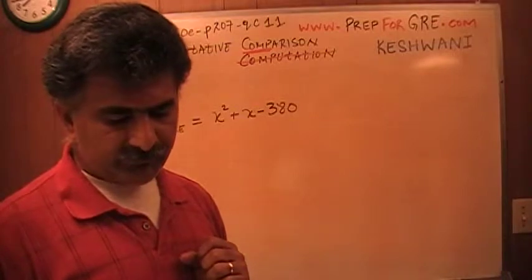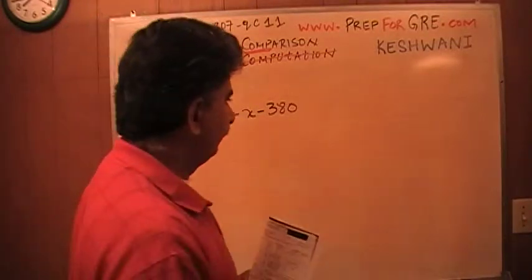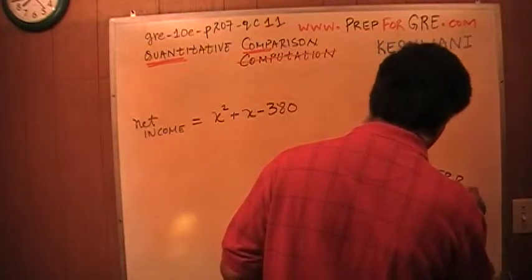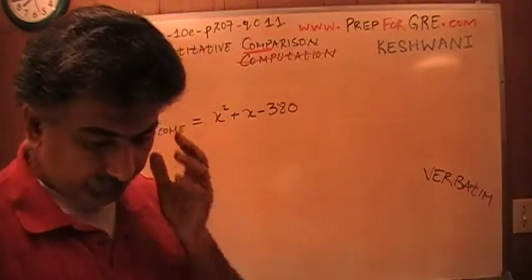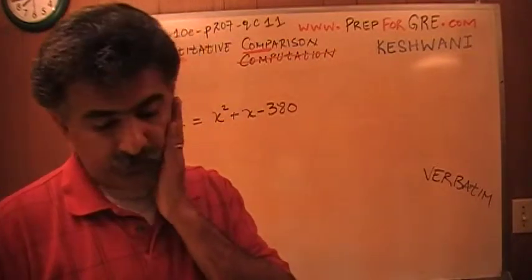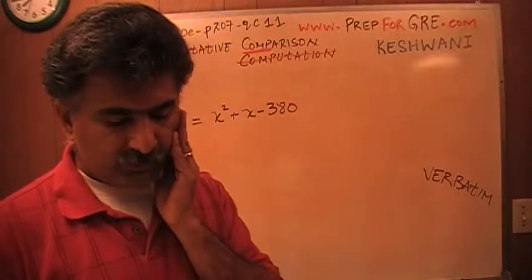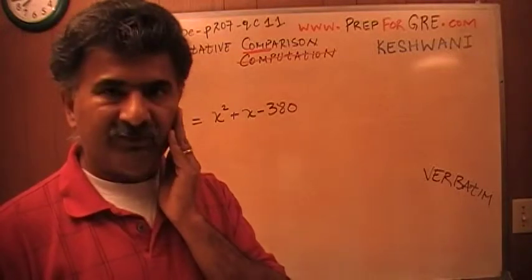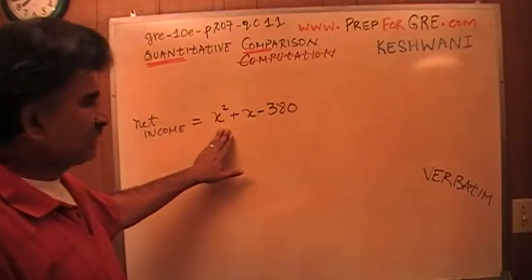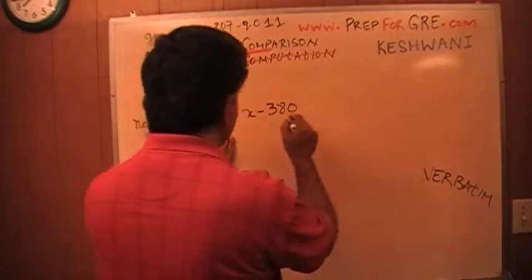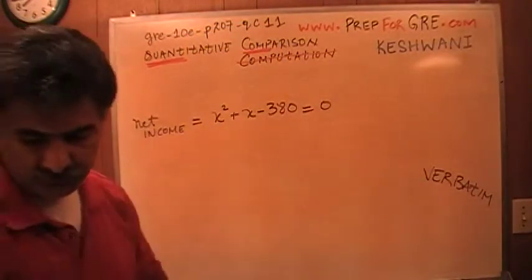The question simply is, in the first column they tell you, I am going to read it first verbatim. If you do not know what verbatim means, look it up and learn it. I am going to read it word for word here. It says the number of items that must be sold for the net income to be zero. That is the first column. In other words, they want you to find out the value of x for which their net income equals zero.